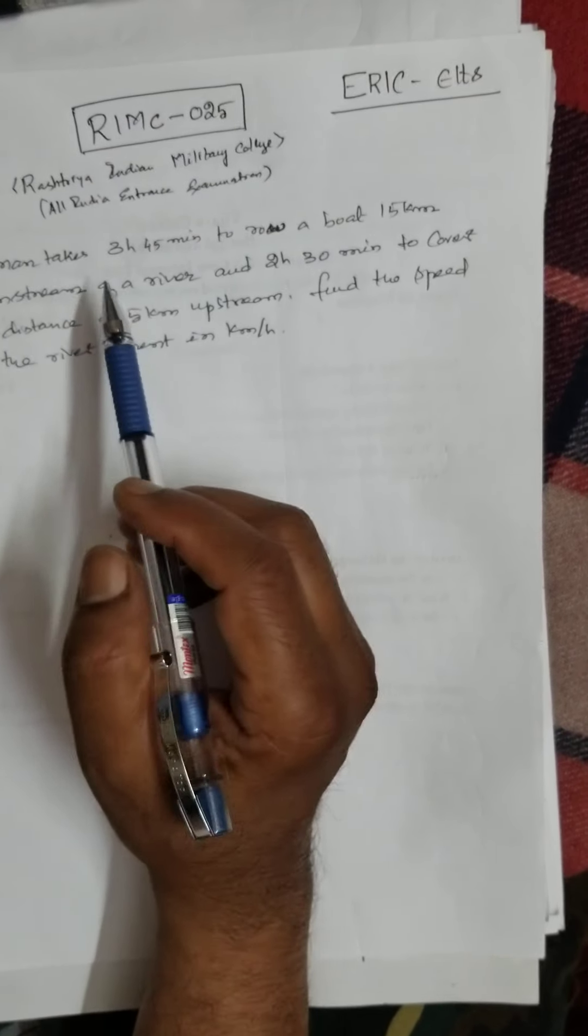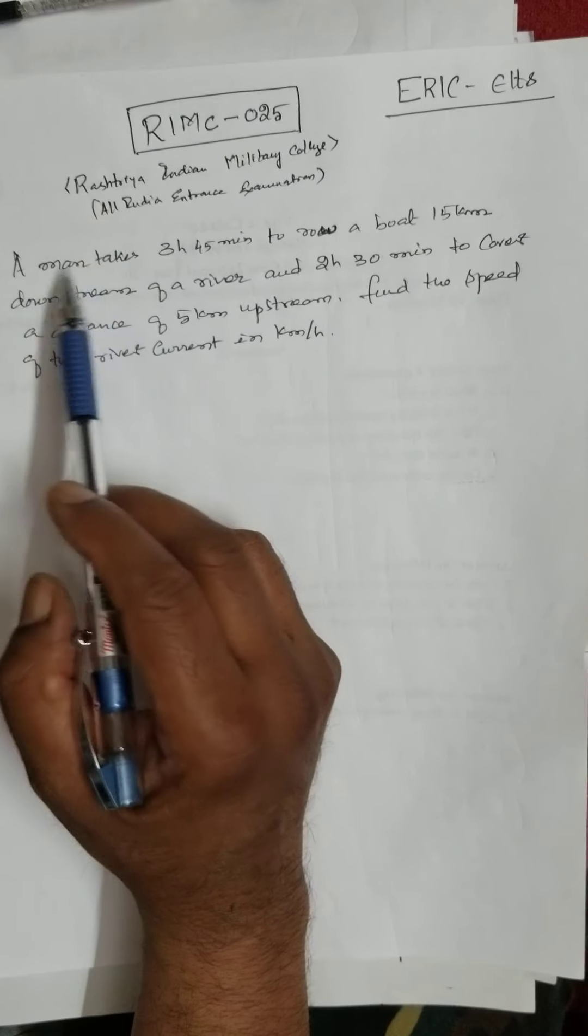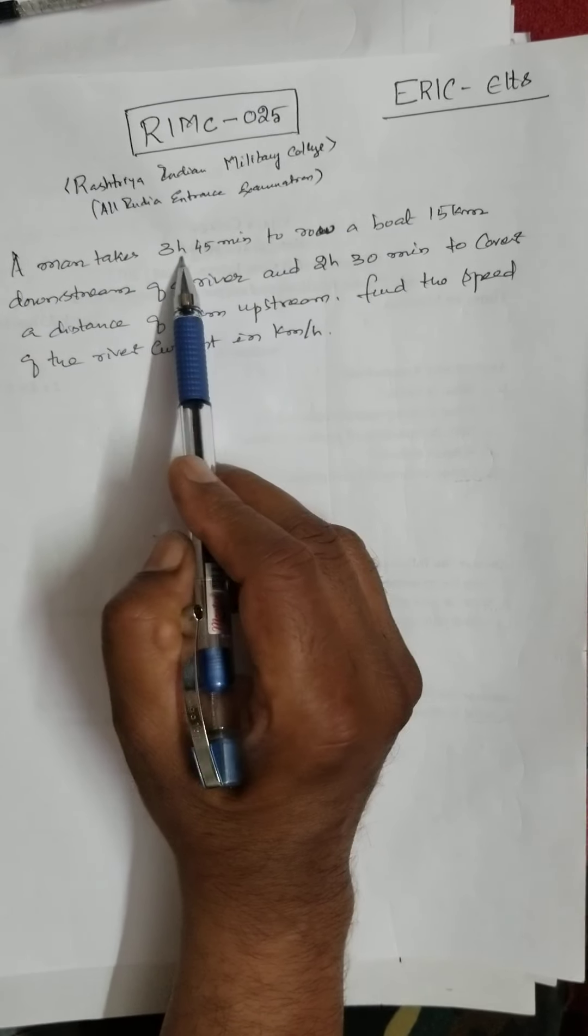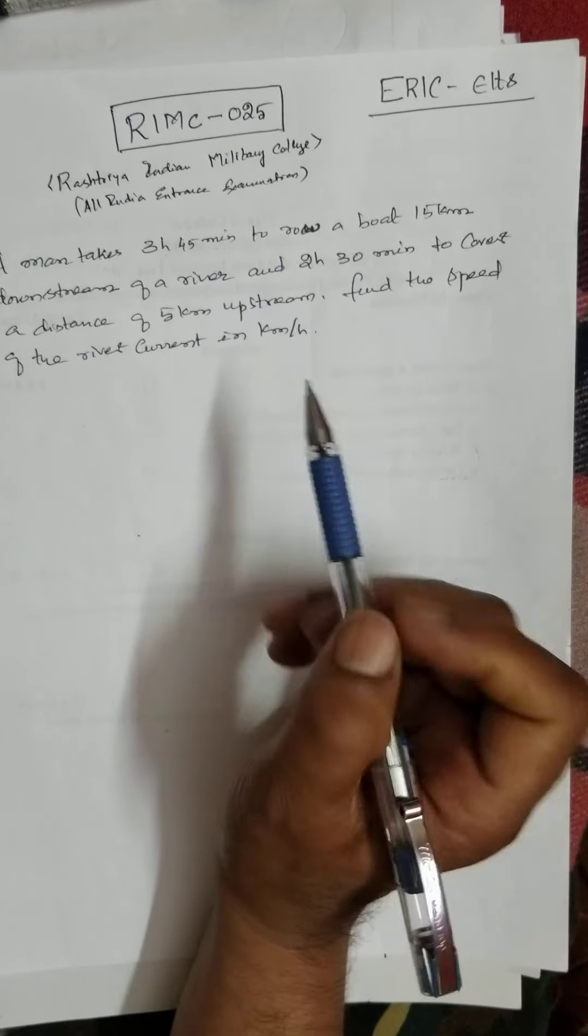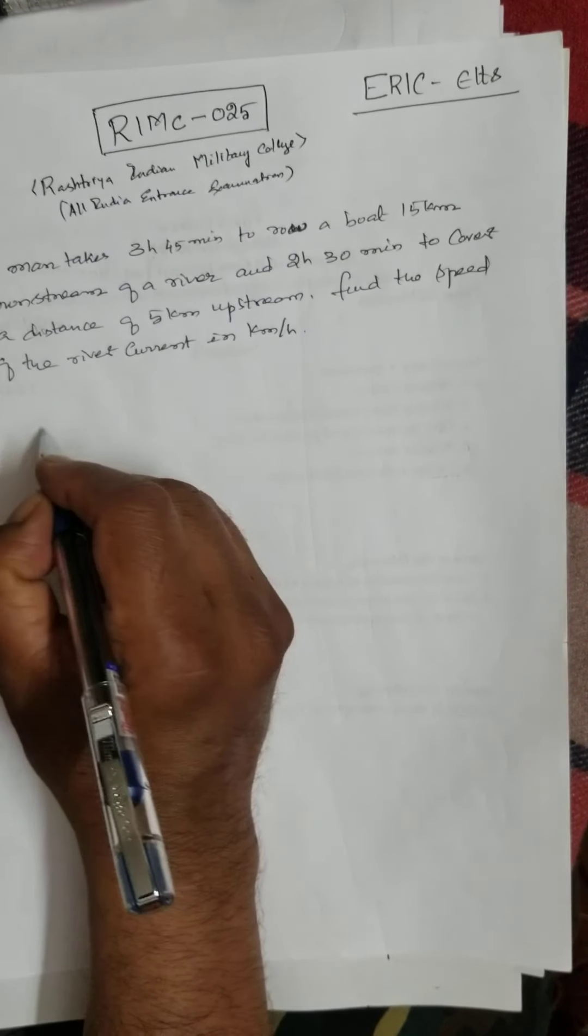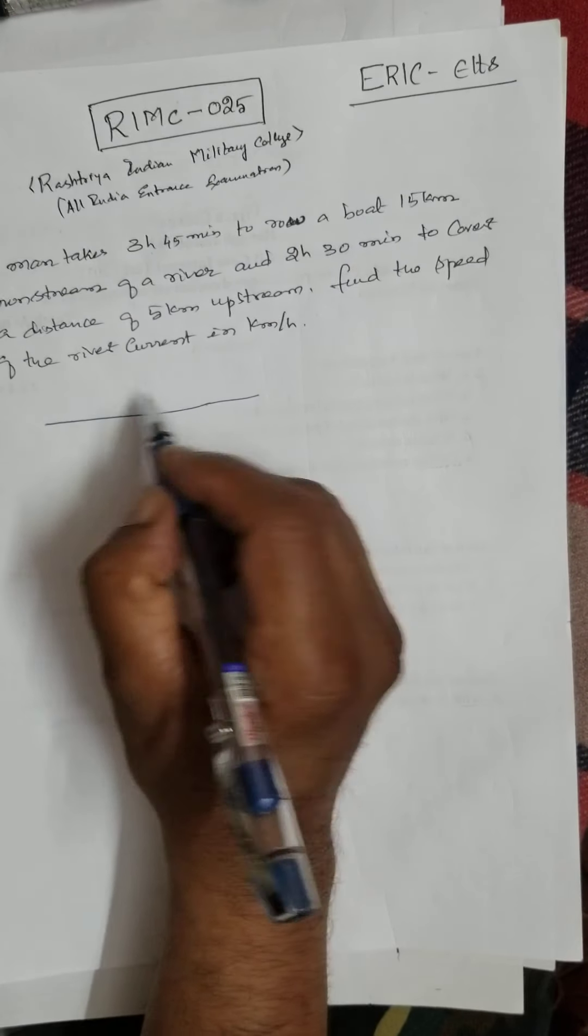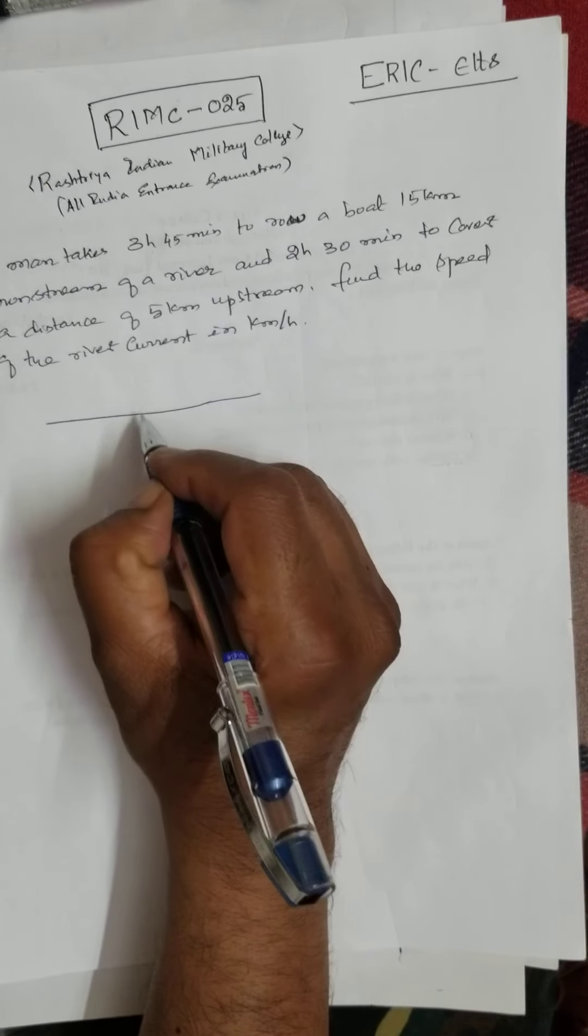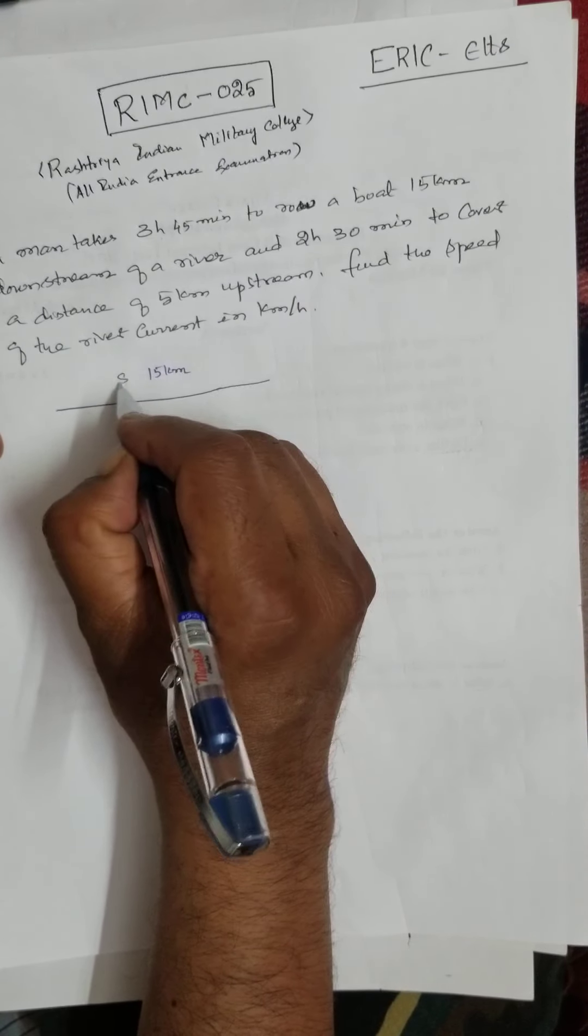Let me look into this, this is a very big chapter, but anyway. A man takes 3 hours and 45 minutes to row a boat for 15 kilometers. As you read, you have to write a diagram. 15 kilometers, the distance.